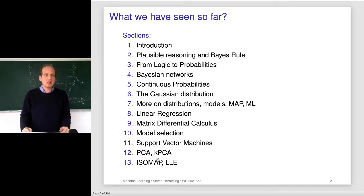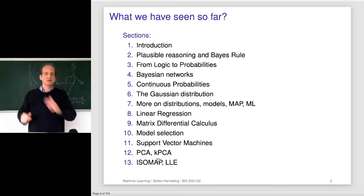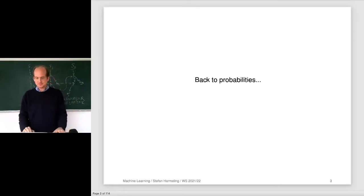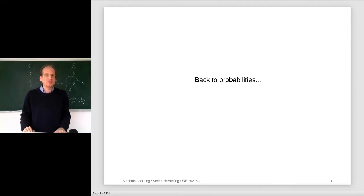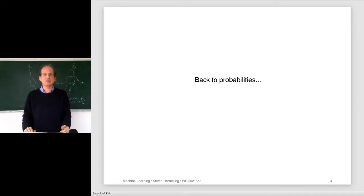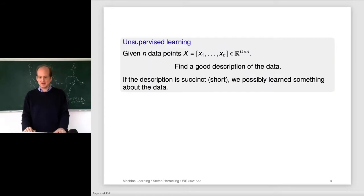Today we will look at clustering methods, where we cluster the space into different parts. This corresponds to a classification problem where we invent labels for our data. We do this with probabilities — they are always there, even if not prominent on the slides, and it's always good to think about them.